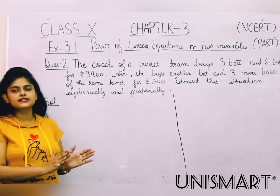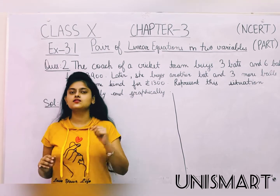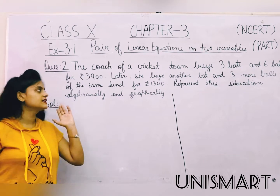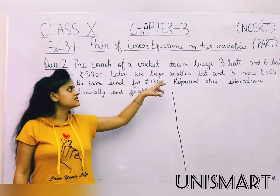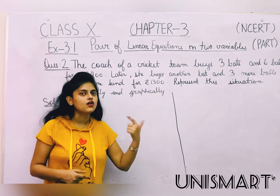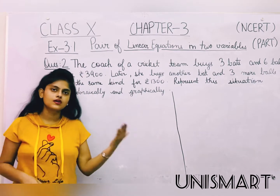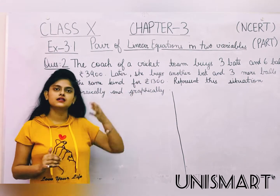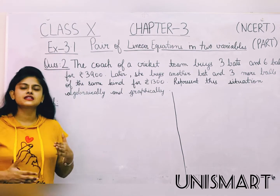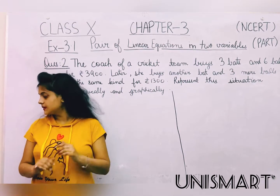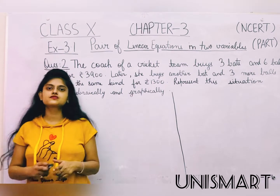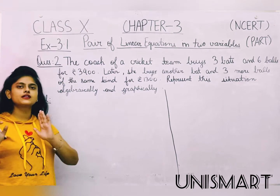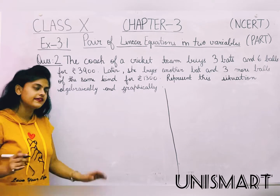So question number 2 is: the coach of a cricket team buys three bats and six balls for 3900 rupees. Later she buys another bat and three more balls of the same kind for 1300 rupees. We will represent it graphically and algebraically. First we form equations, so let's do that.